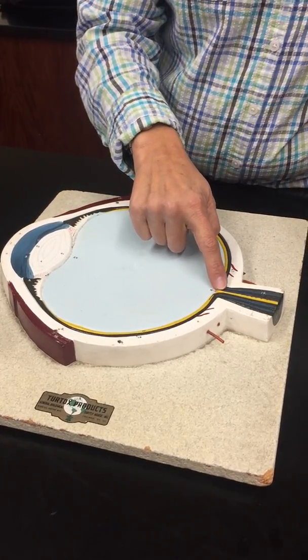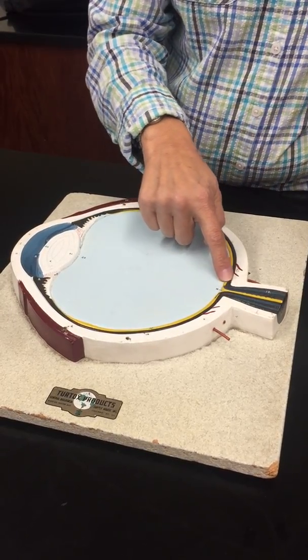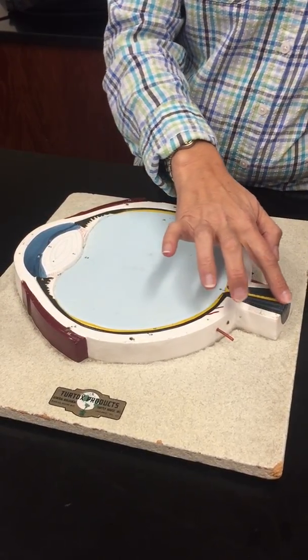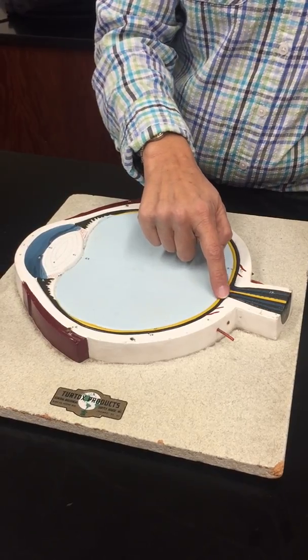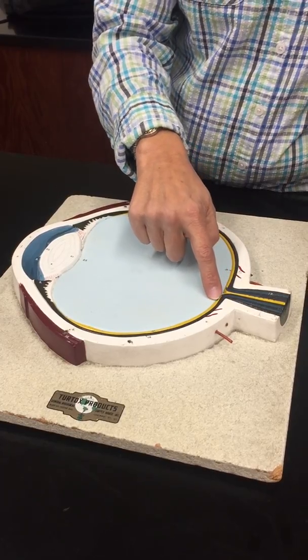This area right here would be the area where the axons of the ganglion cells collectively leave the eyeball and form the optic nerve. So, this area where we don't have any photoreceptors is called the optic disc or blind spot.